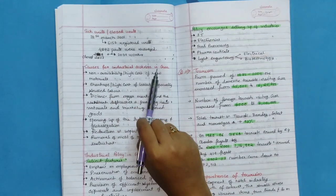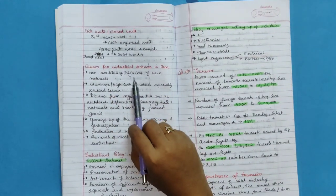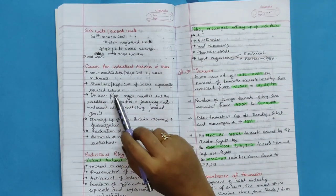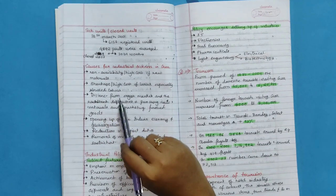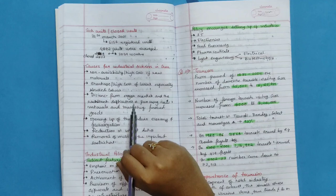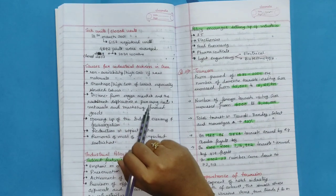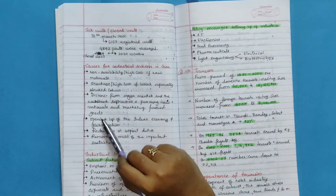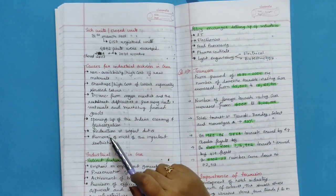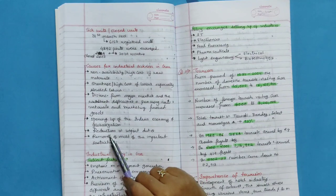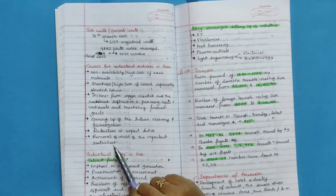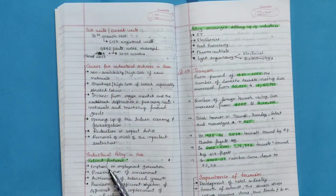Cause for industrial sickness in Goa: Non-availability or high cost of raw material, shortage or high cost of labor, specially skilled labor, distance from major markets and the resultant difficulties in procuring raw material and marketing finished goods, opening up the Indian economy and globalization, reduction in import duties, removal of most of the import restrictions.